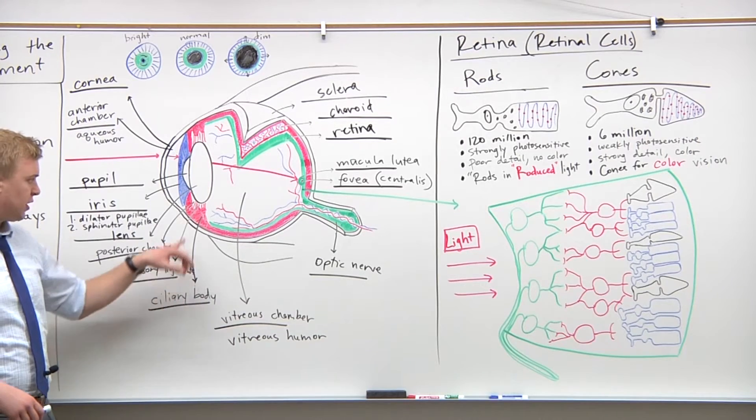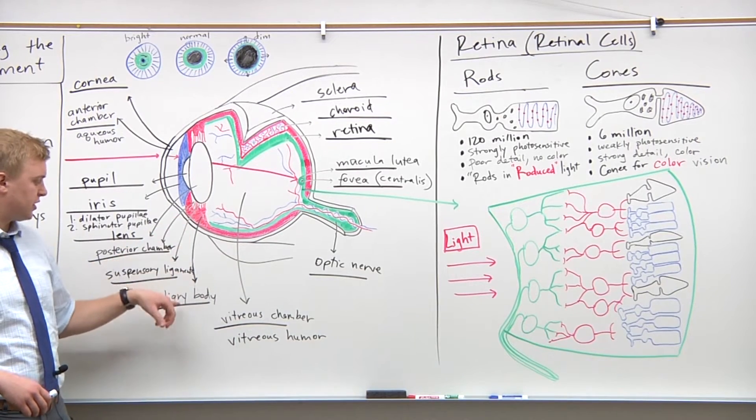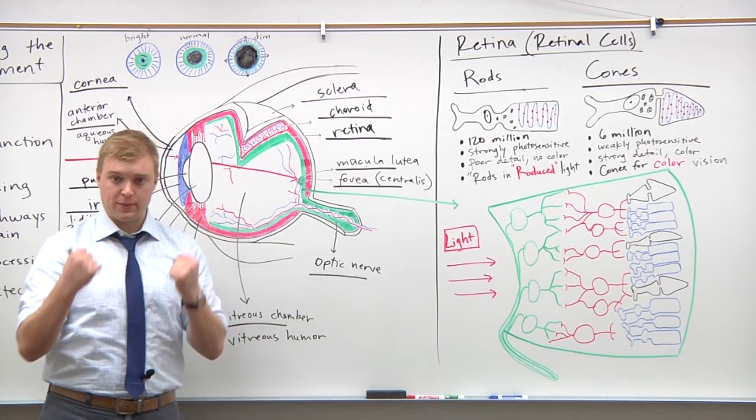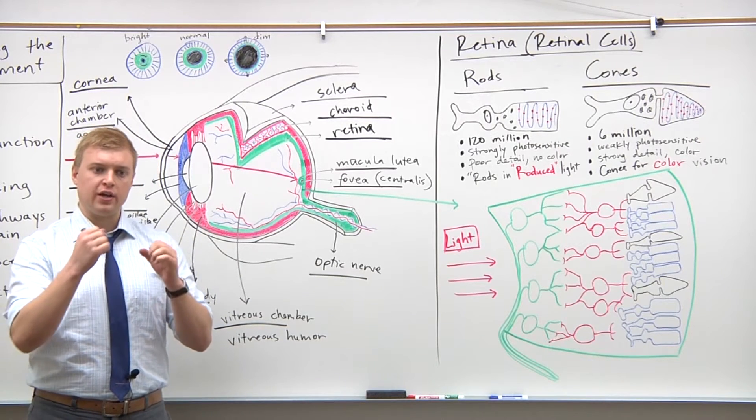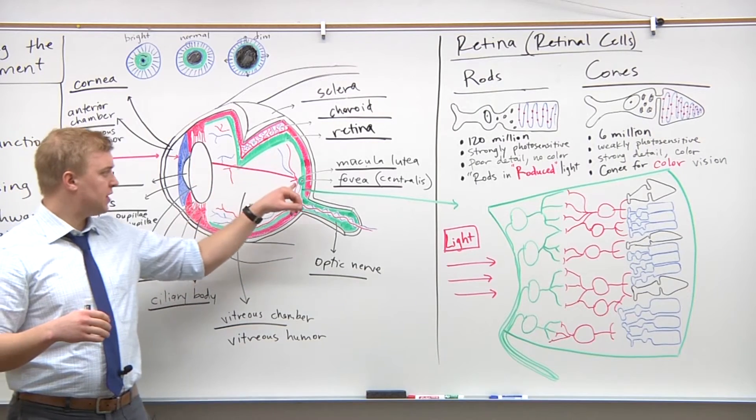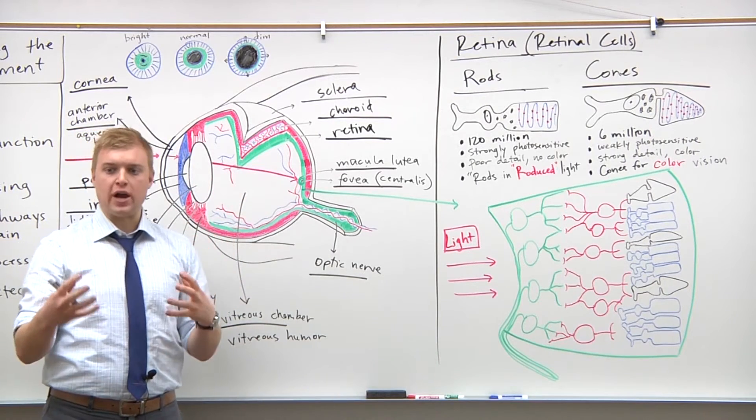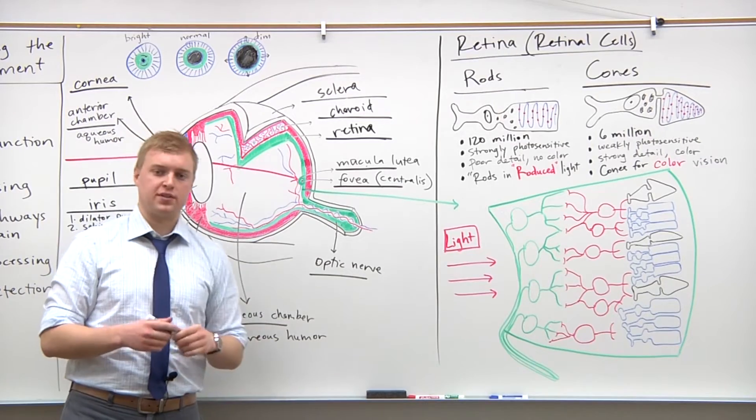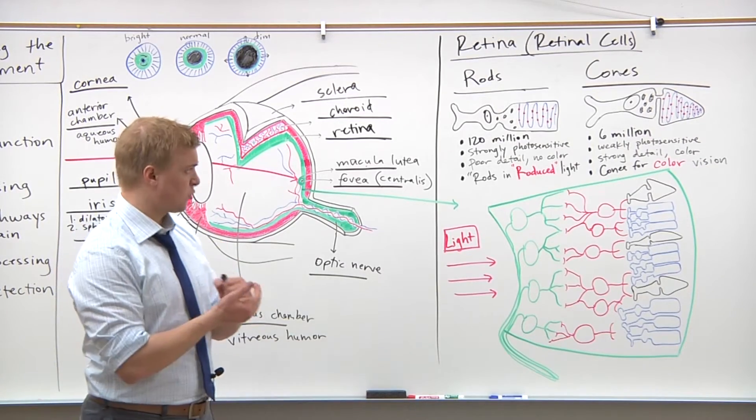Remember we mentioned the ciliary body. The muscles of the ciliary body are going to pull on those suspensory ligaments where it's going to adjust the lens of the eye so that the image, whether it's a really bright image or really bright light, is going to focus right here at the fovea centralis.